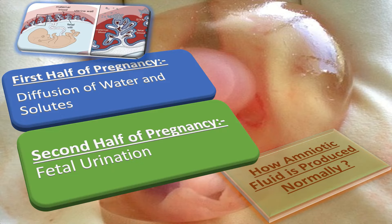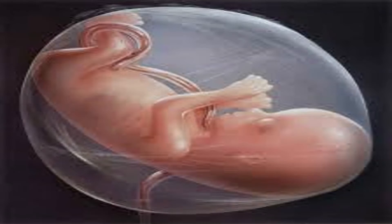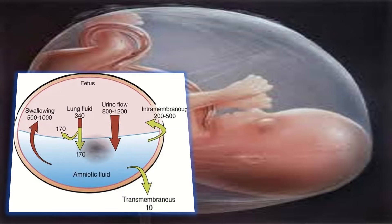In the second half of the pregnancy, by the second trimester the fetal skin becomes keratinized, making it impermeable to further diffusion. At this time the fetus contributes to amniotic fluid volume and composition almost exclusively through fetal urination. Urine has been observed in the fetal bladder as early as 11 weeks transabdominally and 9 weeks transvaginally. The input into amniotic fluid is from fetal urine and lung fluid, and output includes fetal swallowing and intramembranous flow to the placenta and fetus, as seen in this picture.